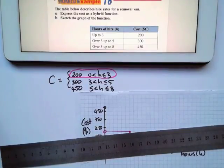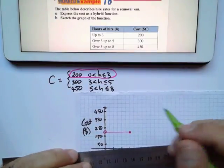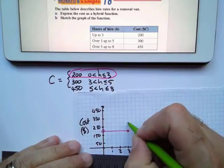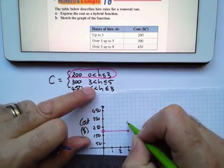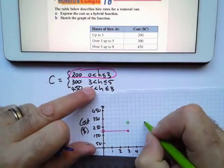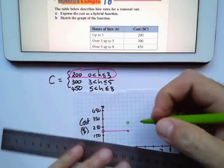Then, from 3 to 5 hours, it's going to cost $300, so $300 over there. It's not including 3, so it is a round thing. And for up to 5 hours, you're going to pay exactly the same. So it's going to be a straight line.